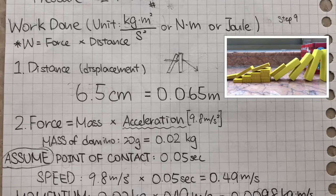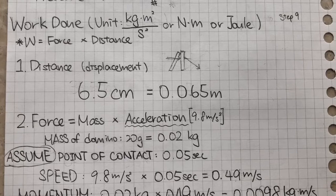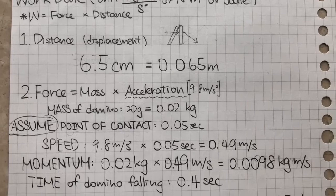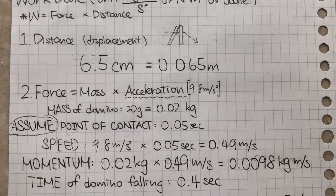So I measured the distance moved from a domino standing to lying on the floor. To get the momentum I weighed the domino and assuming the point of contact is 0.05 seconds, I timed it by 9.8 meters per square second and the domino's mass. So I get the momentum of 0.0098 kilograms meter per second. Next I divided the momentum by 0.4 seconds which gives me the force of 0.0245 newtons. Therefore work done equals 0.0016 joules after I times force and distance together.